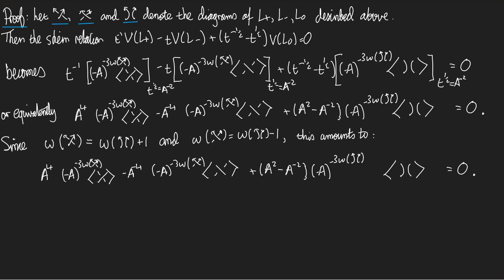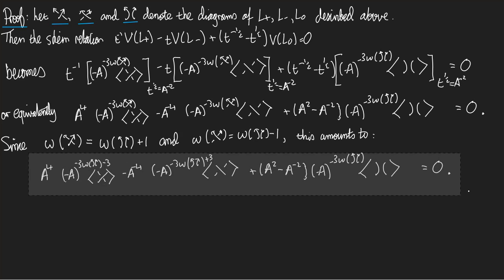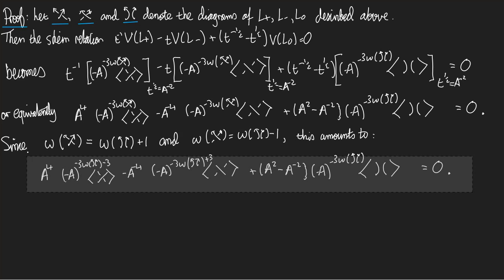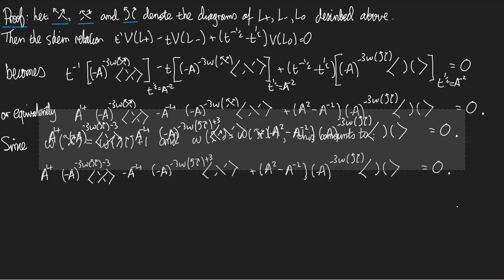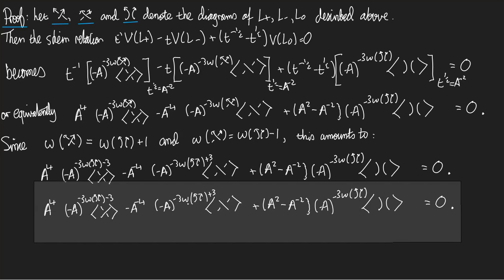So what happens to minus a to the minus three to the writhe of the positive crossing? It's minus a to the minus three times the writhe of the smooth crossing, minus three. And for the negative crossing, the writhe is the writhe of the smooth crossing plus three added on. That gives my equation after substituting for the writhe.